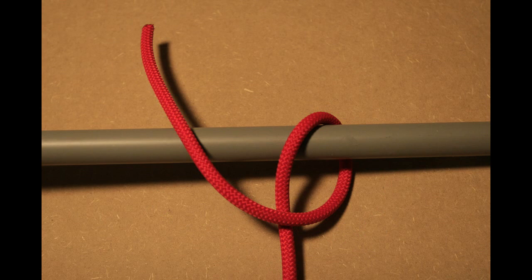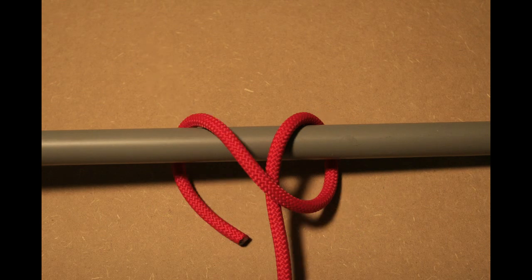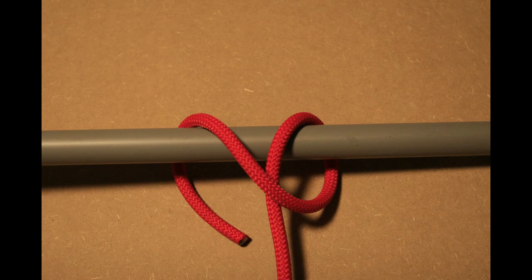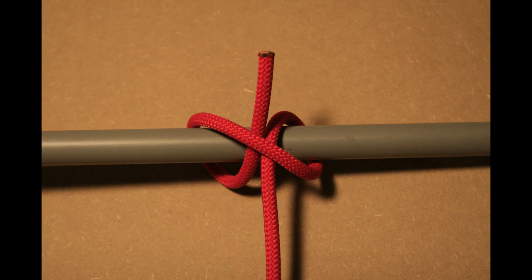Next we are going to make another loop around the tube. Take the working end and pass it through the second loop as shown in the pictures. Now set and dress the knot.